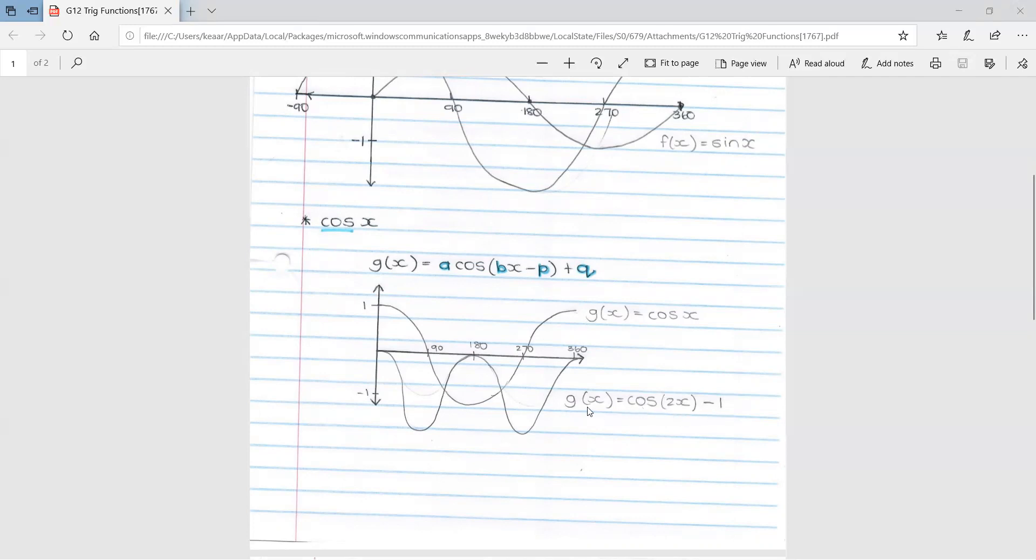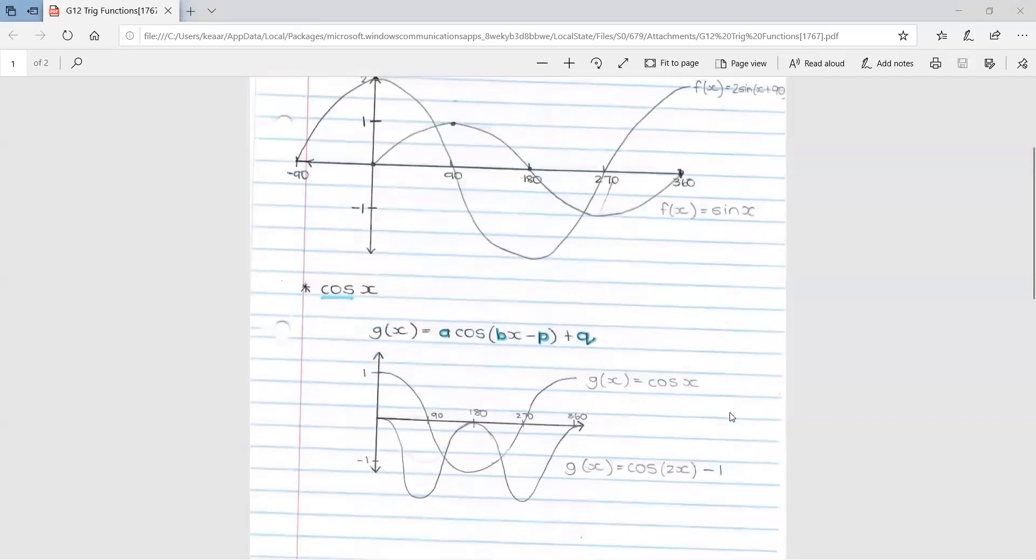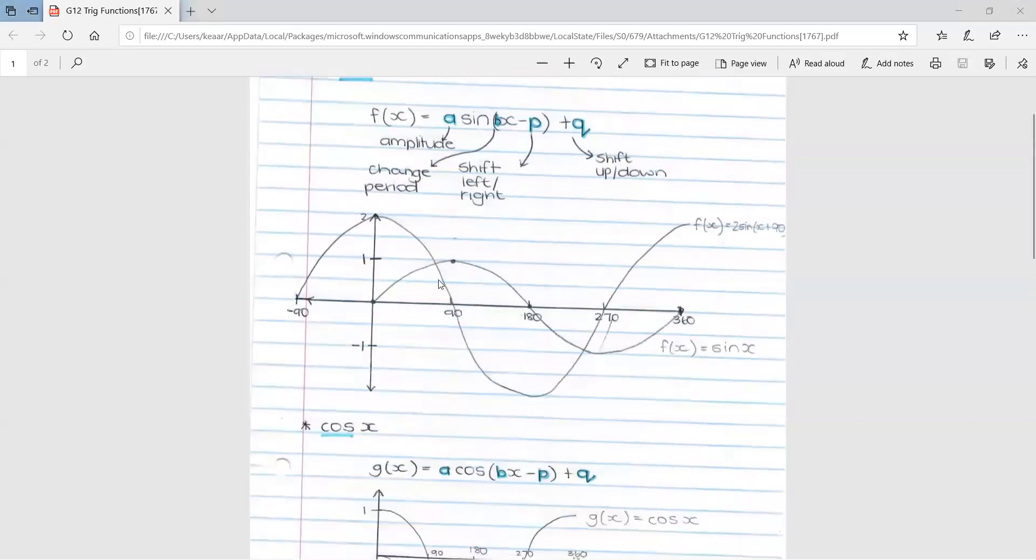So if you were given this equation and asked to draw the graph, you could use the fact that because my b value is two, I would have to do a full cycle in 180 degrees and shift it one unit down. You can adjust from the original. Or if you would prefer to use your calculator, you could type this into your calculator using your table function and plot the points and join the dots. Between the cos and sin graph, I've gone through each of the different changes that can happen. I've done two in each. So in the sin graph, we've used a change in amplitude and a change in p. And in the cos graph, we use a change in period and a change in q.